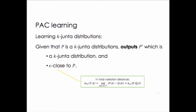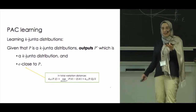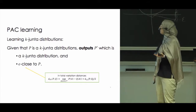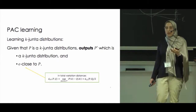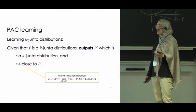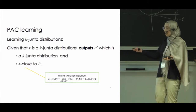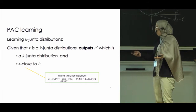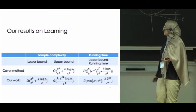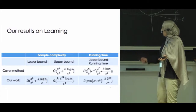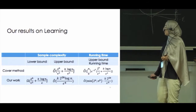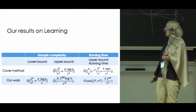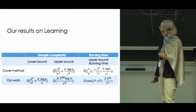Now I'm going to explain the learning algorithm. We consider the PAC learning model: we have a distribution P, we draw samples from P — P is unknown but we can draw samples from it — and then we output a distribution P prime such that P prime is a k-junta distribution that is close to the original P. By close, I mean the total variation distance is less than epsilon. We can show that learning a k-junta distribution requires 2 to the k over epsilon squared plus k log n over epsilon samples.